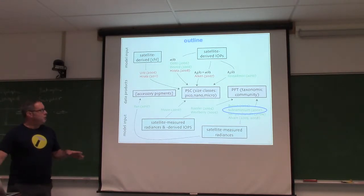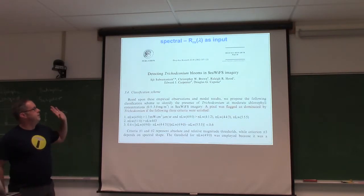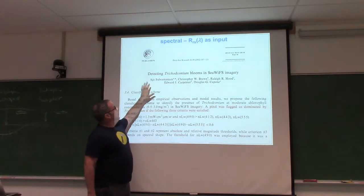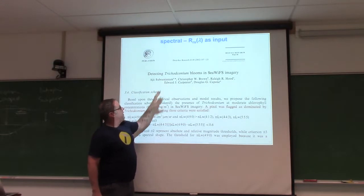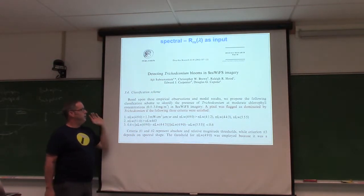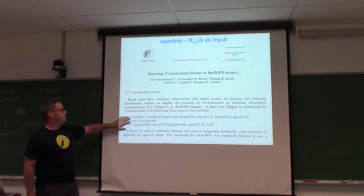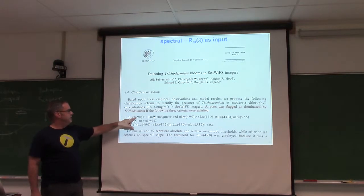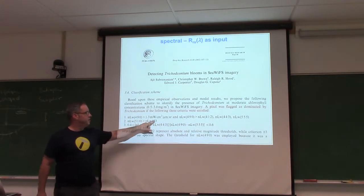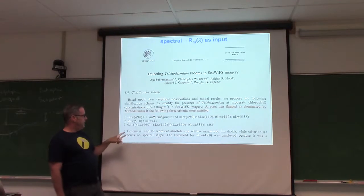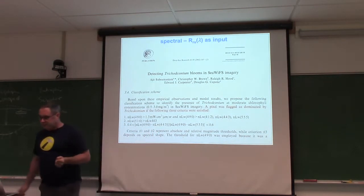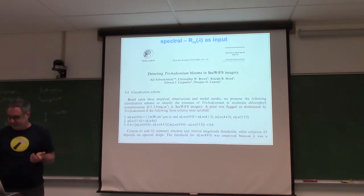All right, let's step quickly through a few here. This is 15 years old at this point, but Ajit was very keen on identifying trichodesmium. The way he approached this was simply to use thresholds associated with different radiance levels. And so this is just a decision tree. Yeah, if your water leaving radiances at 490 was above this threshold, and this condition was met, and this condition was met, and this condition was met, it was trichodesmium. And it was effective to a first order.